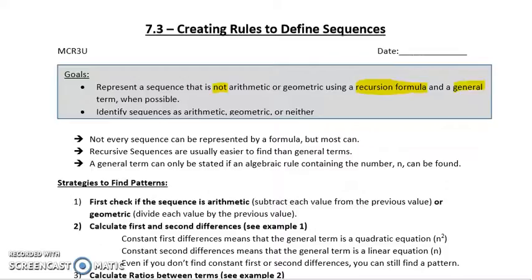Not every sequence can be represented by a formula, but most can. Recursive sequences are usually easier to find than general terms. We can always figure out how something relates to the previous term, but we can't always figure out how something can be found directly to the hundredth term. And that is what's really useful. If we can find a recursive formula, those things can be fed through loops in computer programming, and we don't need a general term. There are certain things that general terms are very difficult to find, so recursive sequences can be very useful.